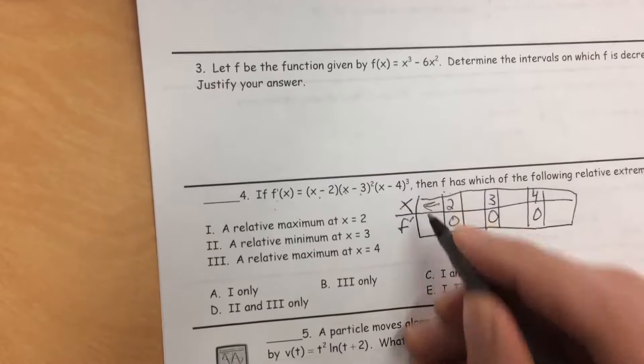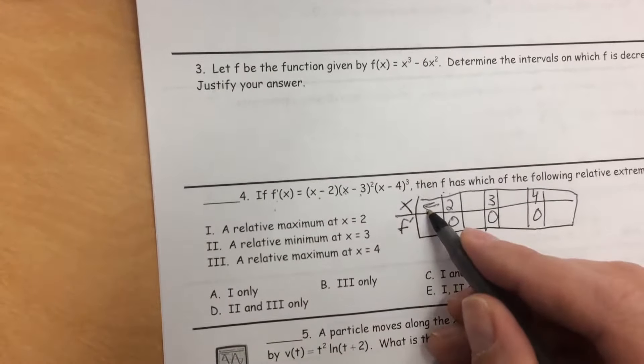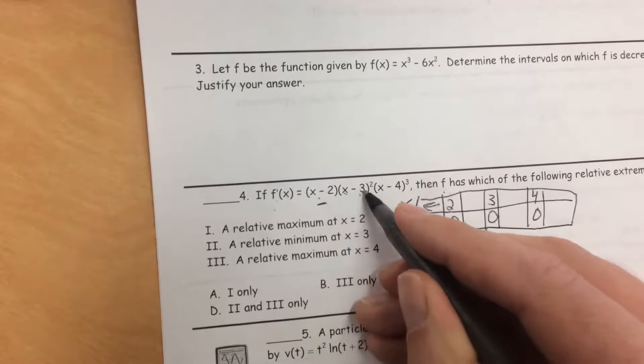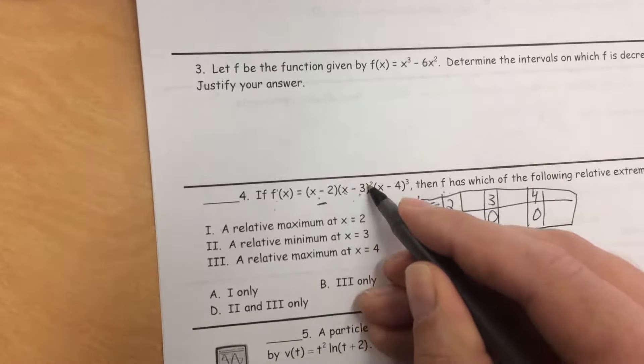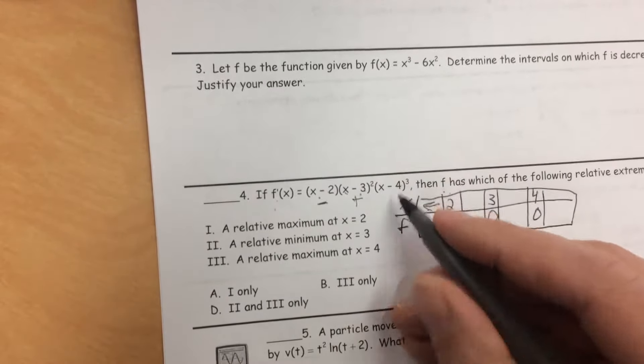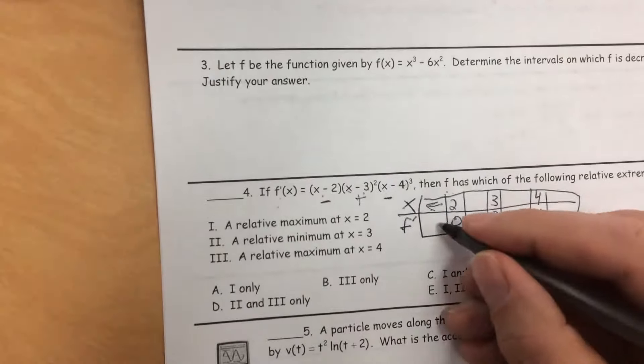When we pick a number less than 2, I'm going to put in 1. 1 minus 2, it's going to be negative. 1 minus 3 is going to be a negative, but a negative squared is a positive. 1 minus 4 is a negative, and a negative cubed is a negative. So this is going to be positive.